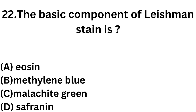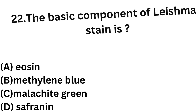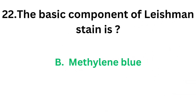Question number 22: The basic component of Leishman stain is — Option A: Eosine. Option B: Methylene blue. Option C: Malachite green. Option D: Saffron A. Eosine and methylene blue are the components of Leishman stain. Eosine is the acidic part and methylene blue is the basic part. So the correct answer is Option B, methylene blue. The basic component of Leishman stain is methylene blue.